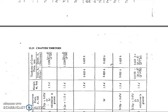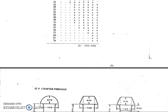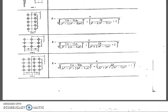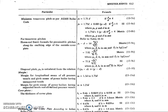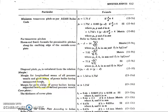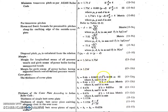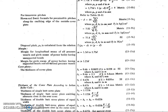Next, we need to determine the margin. The margin is given by equation 13.11a as m = 1.5d to 1.75d. This applies to the longitudinal seam joint for all pressure vessels and power boilers with unsupported heads.